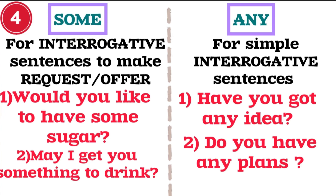Rule 4 for the pronoun 'any': 'any' is also used in interrogative sentences, but not to make a request or an offer. For example, 'Do you have any siblings?' — we don't say 'Do you have some siblings?' Another example: 'Do you have any plan?' — that's more correct. Whenever you need to ask a question that is not a request or an offer, you can use the pronoun or determiner 'any.'